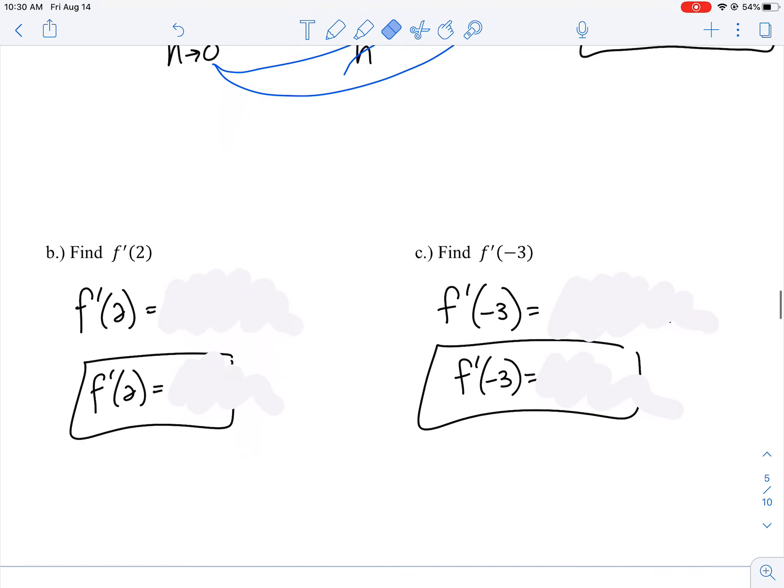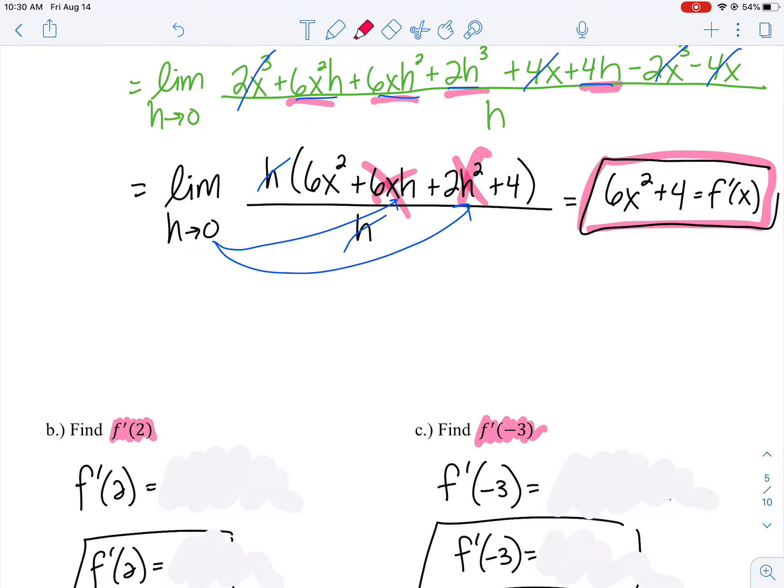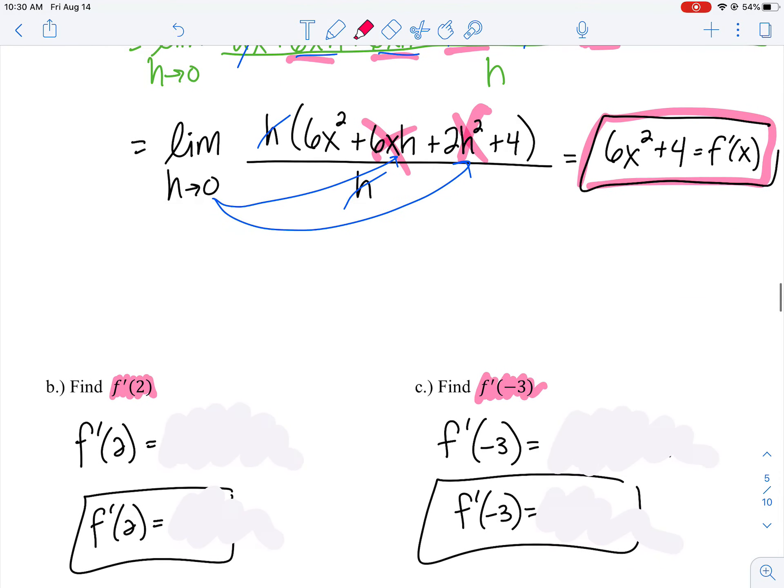That's the derivative at any x value. Parts b and c ask us to find the derivative at specific x values. Let's find the derivative when x = 2, and when x = -3. We'll take our derivative and substitute in 2, then substitute in -3.